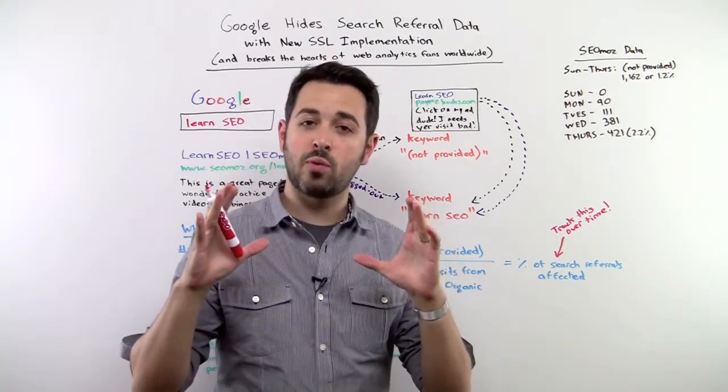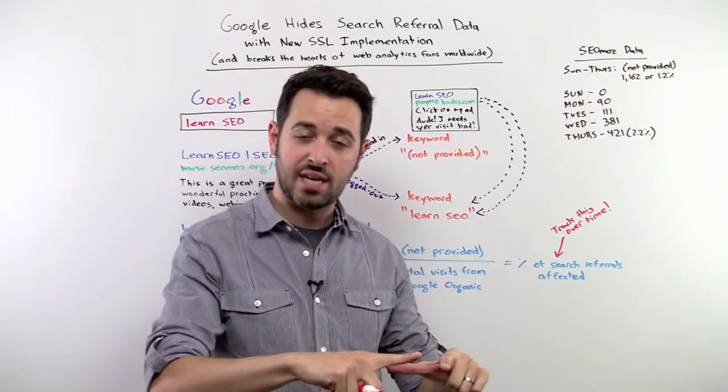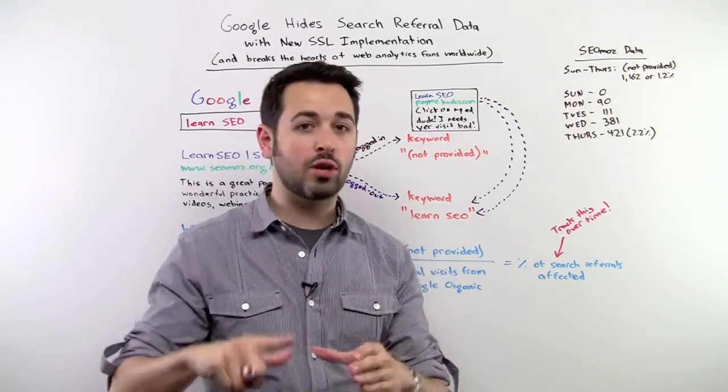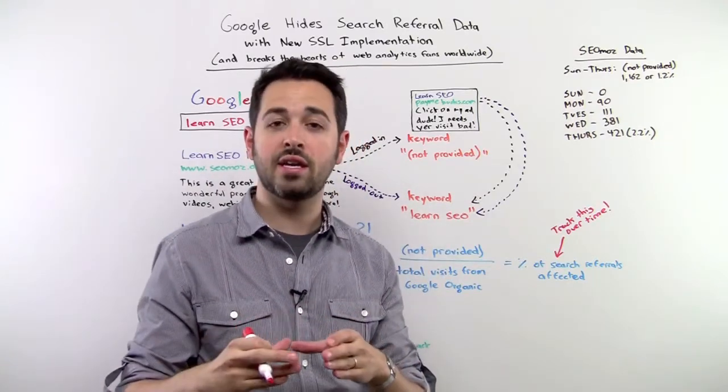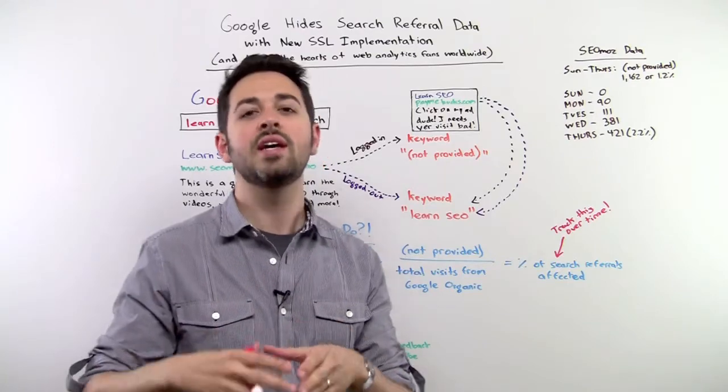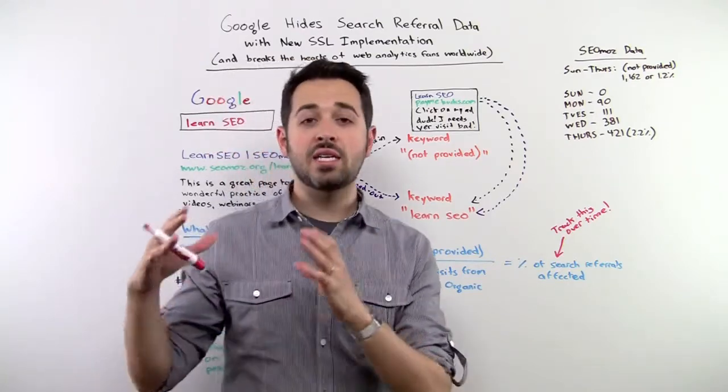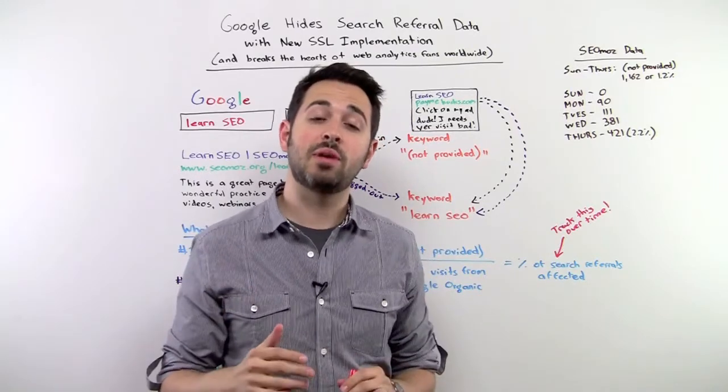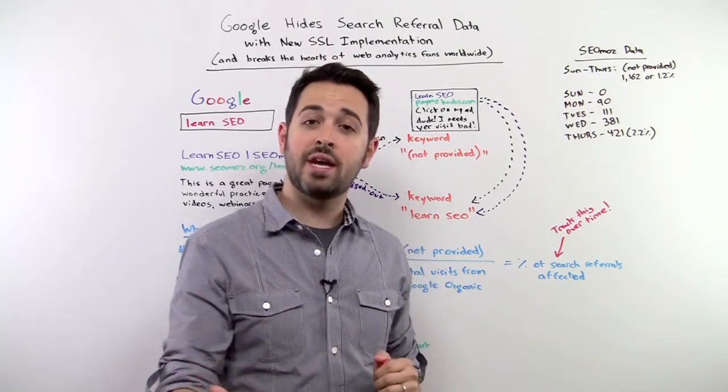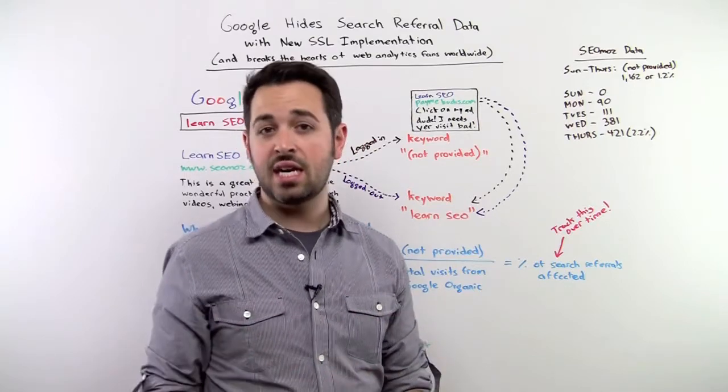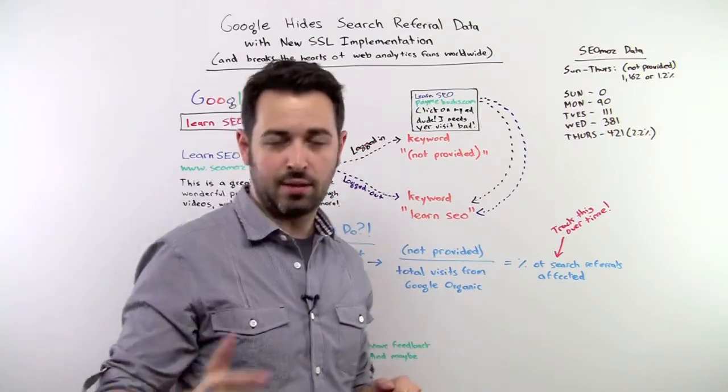I want to try in this Whiteboard video to explain why this has happened, what Google is doing, and why they claim they're doing it, and then also explore some of the reasons that they might actually be doing it, and try to provide some actionable information about what folks in the web analytics and SEO spheres can do since this data may become less available.